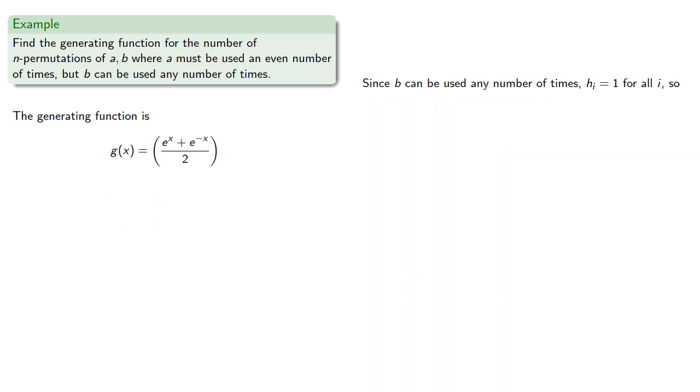Since b can be used any number of times, h_i equals 1 for all i, and so our exponential generating function for b will be e to the x.